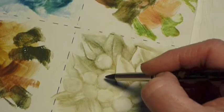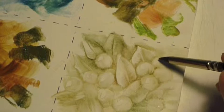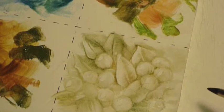Use a wipe out tool to carve out some highlights on your berries. Highlight the berries that appear to be reflecting sunlight. The berries that will be hidden in the shadows on the painting, they don't necessarily need a highlight at this point.